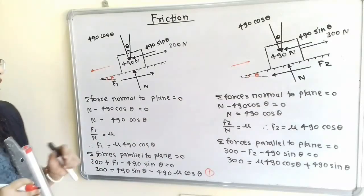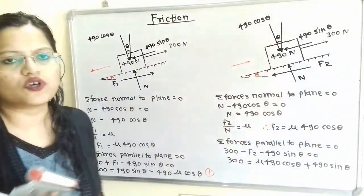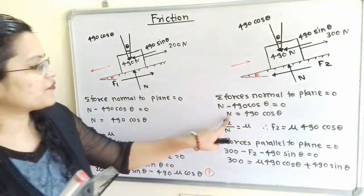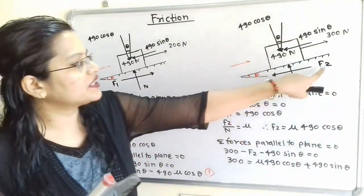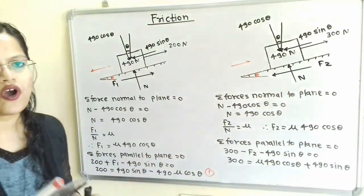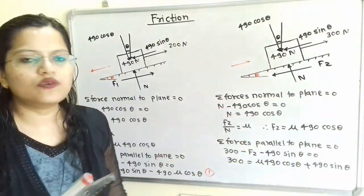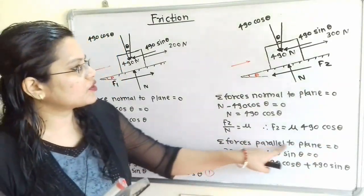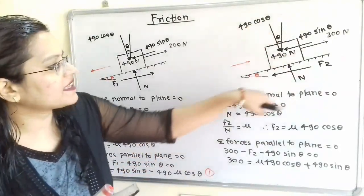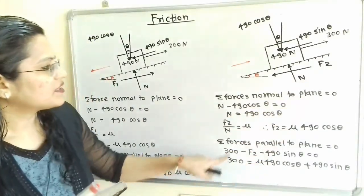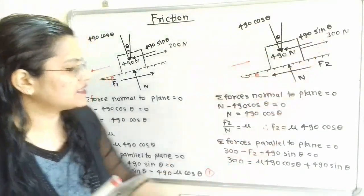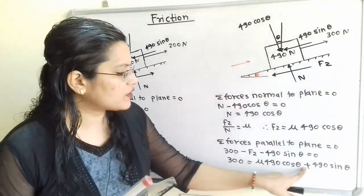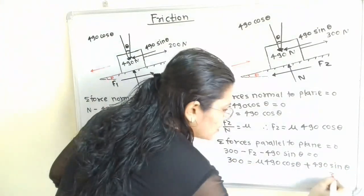For the second diagram, summation of forces normal to the plane gives N equals 490 cos theta. By the law of friction, F2 equals mu times 490 cos theta. Summation of forces parallel to the plane: 300 minus F2 minus 490 sin theta equals zero, which simplifies to Equation 2: 300 equals mu times 490 cos theta plus 490 sin theta.